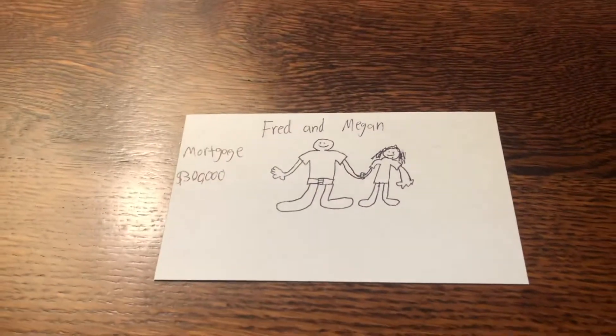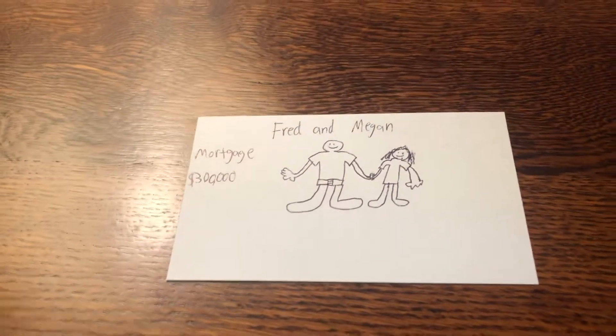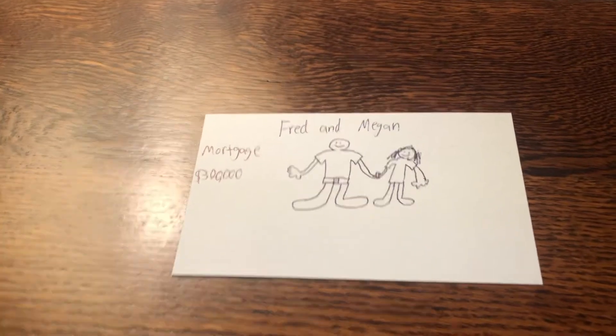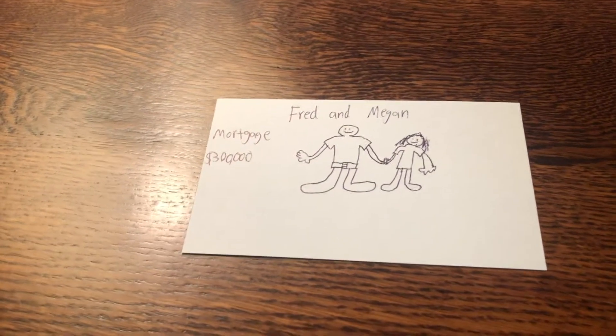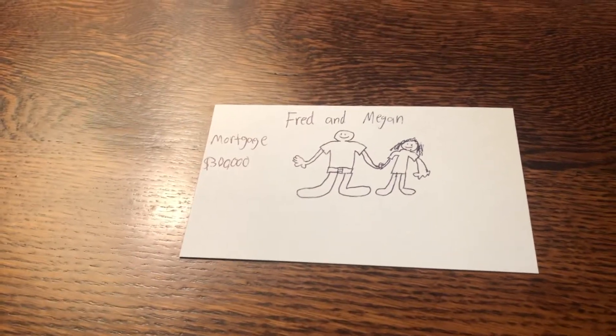To give some context, Fred and Megan here are interested in applying for a mortgage to purchase a home and start a family. They both have well-paying jobs and good credit scores. They saved up the money for the down payment, and now they're working on applying for a mortgage for the rest of the cost of the house.